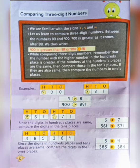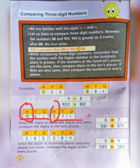Next example: 561 and 571. The hundreds places are the same, so we will move to the tens place and compare 6 and 7. Since 6 is smaller than 7, our answer will be less than.